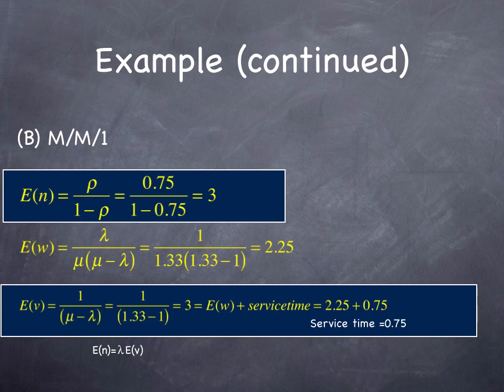The expected delay, which is the wait time plus the service time, is 2.25 plus 0.75, which is 3, 1 over 1.33 minus 1. That's consistent with their service time of 0.75 minutes per customer.